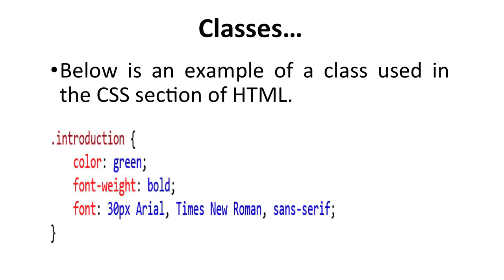Here is an example of a class used in the CSS section of HTML: '.introduction' with color set to green, font-weight set to bold, font-size 30 pixels, and font-family set to Arial, Times New Roman, and sans-serif. The curly brace closes the class definition.